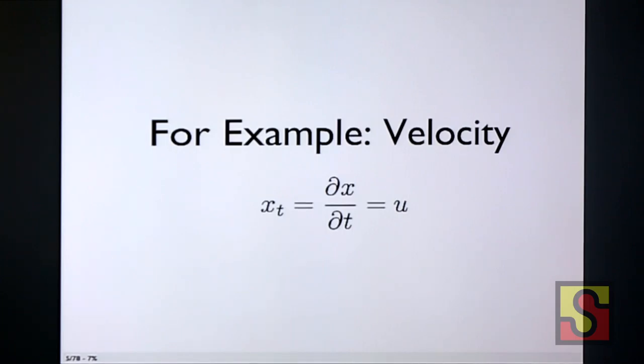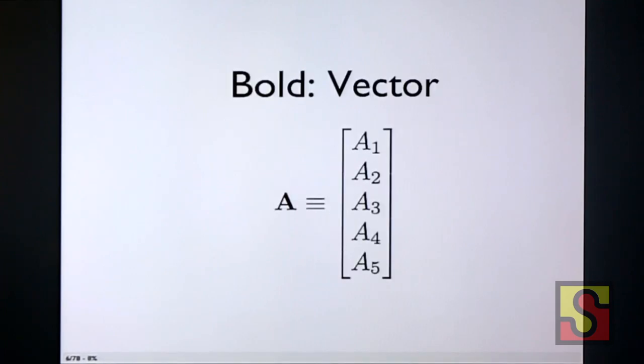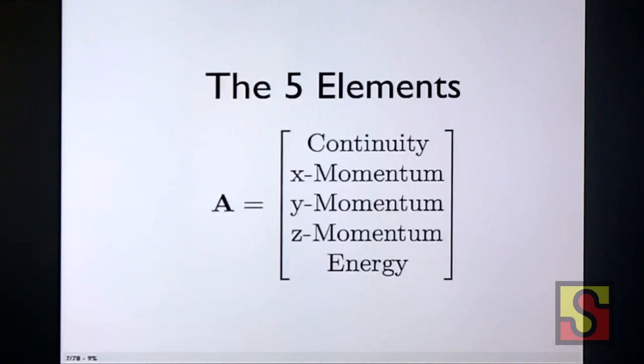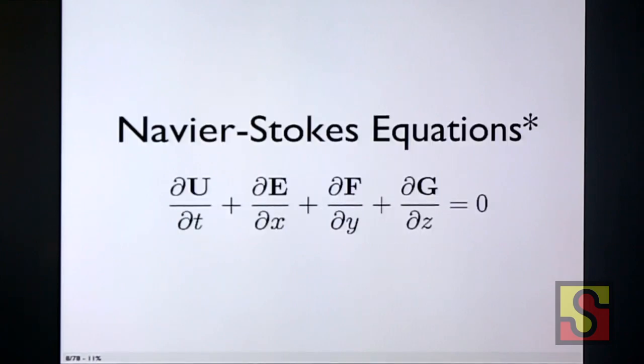First, some notation. If you see a subscript, that means I'm taking the partial derivative of the large letter in respect to the small letter. For example, if you have x, which is position in the x direction, subscript t, that means I'm taking partial of x with respect to t, also known as horizontal velocity, u. If you see something in bold, that means it's a vector. In our case, it's going to be a five-element vector because we're going to be solving continuity, three momentum equations, and the energy equation.